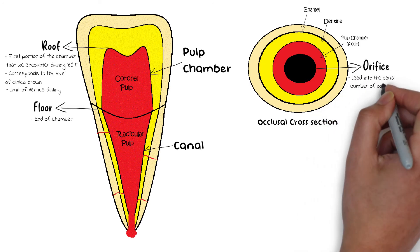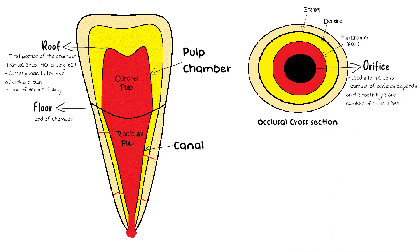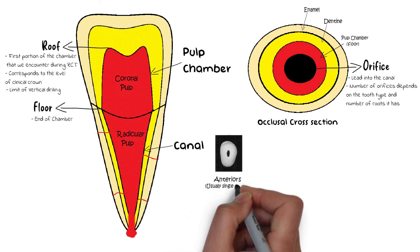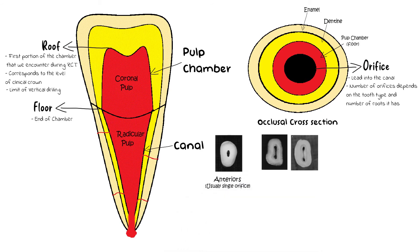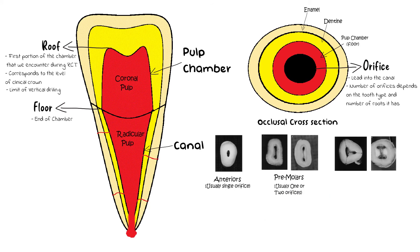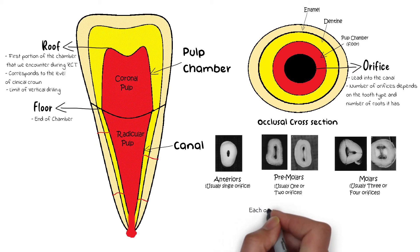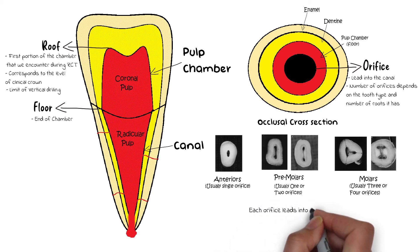The number of orifices on the floor depends on the tooth. In incisors, we mostly have a single orifice. In premolars, we may have one or two orifices. And in molars, we usually have three or four orifices. Each orifice leads into a separate canal. These canals may remain separate throughout the root or merge with one another to form complex anatomy — a topic requiring detailed discussion which I will cover in future videos. For now, let us understand the basic anatomy.